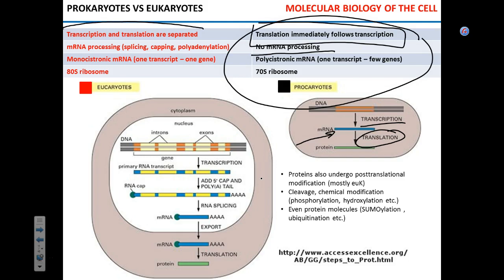In eukaryotes, transcription and translation are separated both in time and in space — in space by the nuclear envelope. mRNA that is synthesized in the nucleus has to be transported across the nuclear envelope into the cytoplasm or endoplasmic reticulum for further translation. In time, because there is mRNA processing such as splicing, polyadenylation, and capping.